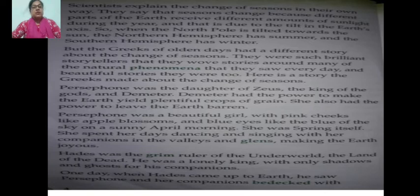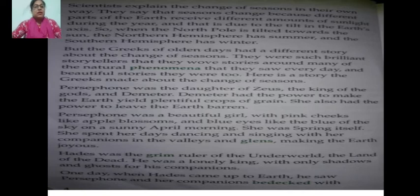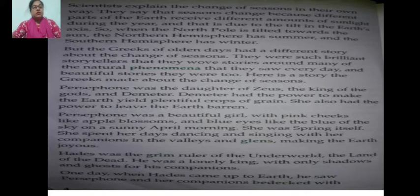Persephone was the daughter of Zeus, the king of the gods, and Demeter, Persephone's mother. Demeter had the power to make the earth yield plentiful crops of grain — yield means produce. She also had the power to leave the earth barren. Barren land means not good enough to produce plants and crops. Persephone was a beautiful girl with pink cheeks like apple blossoms and blue eyes like the blue of the sky on a sunny April morning. She was spring itself, and spent her days dancing and singing with her companions in the valleys and glens — glens means narrow valley.